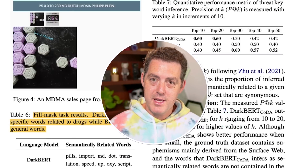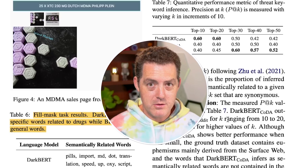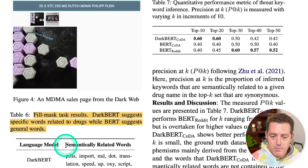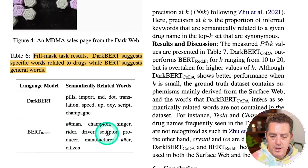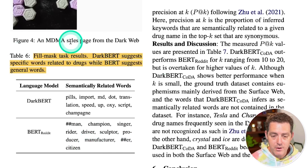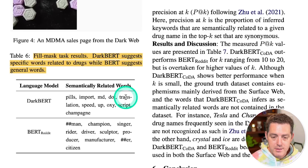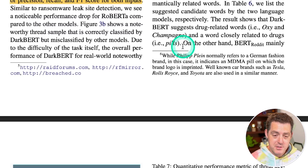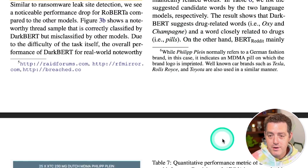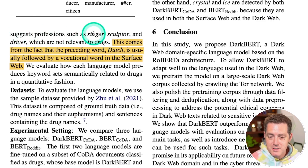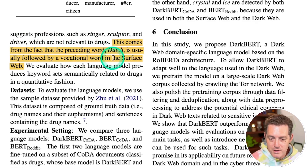An example illustrates the difference between surface and dark web models for identifying drug content. For the standard BERT model, words semantically related to MDMA are things like 'man, champion, singer, writer, driver, sculptor, producer, manufacturer' — not related to drugs at all. For DarkBERT, related words are 'pills, import, MD, translation, speed, oxy, script, champagne' — much more accurate. BERT suggests professions because the preceding word 'Dutch' is typically followed by a vocational word on the surface web.